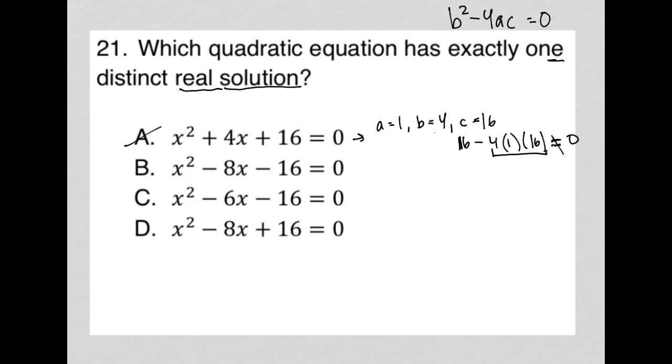Do the same thing for choice B, where a is 1, b is -8, and c is -16. So therefore, b² would be 64 minus 4 times a times -16.